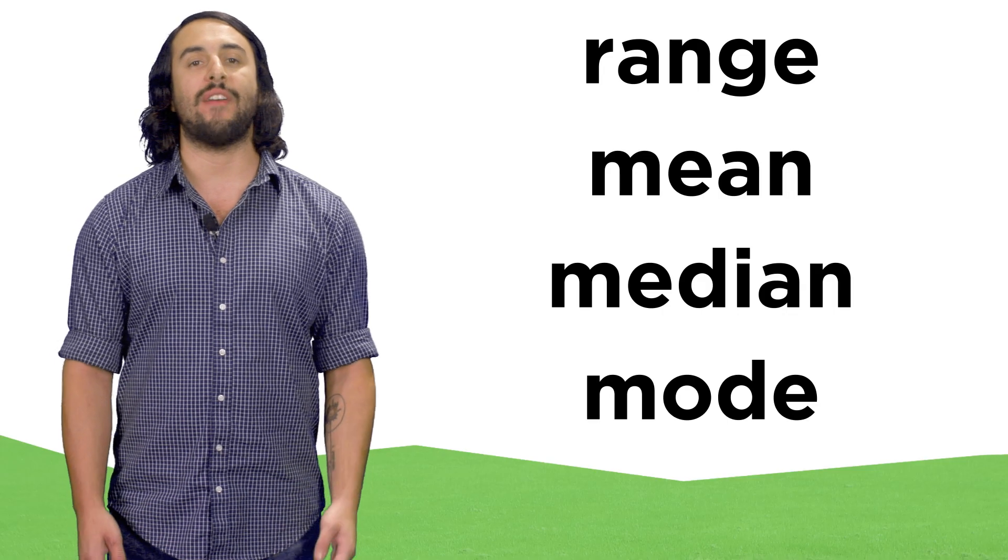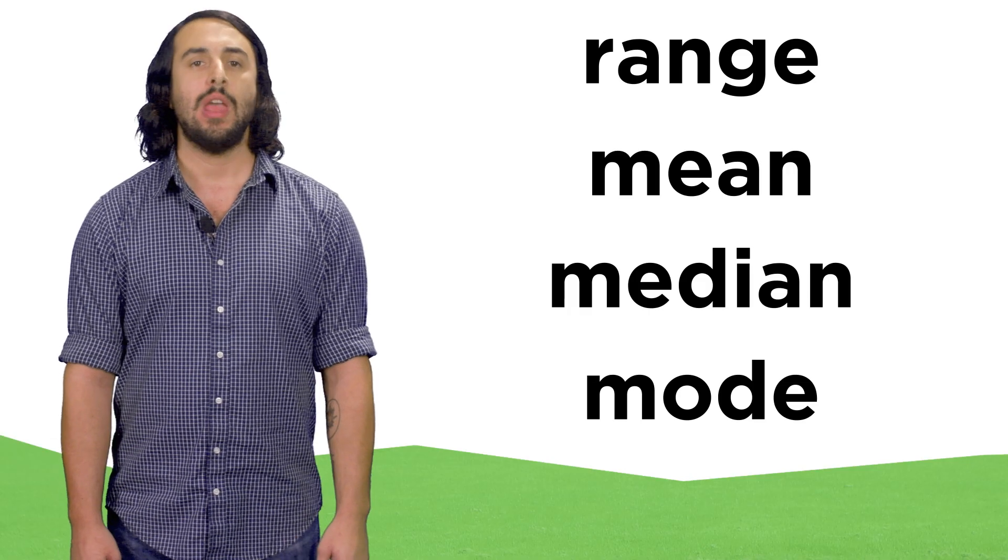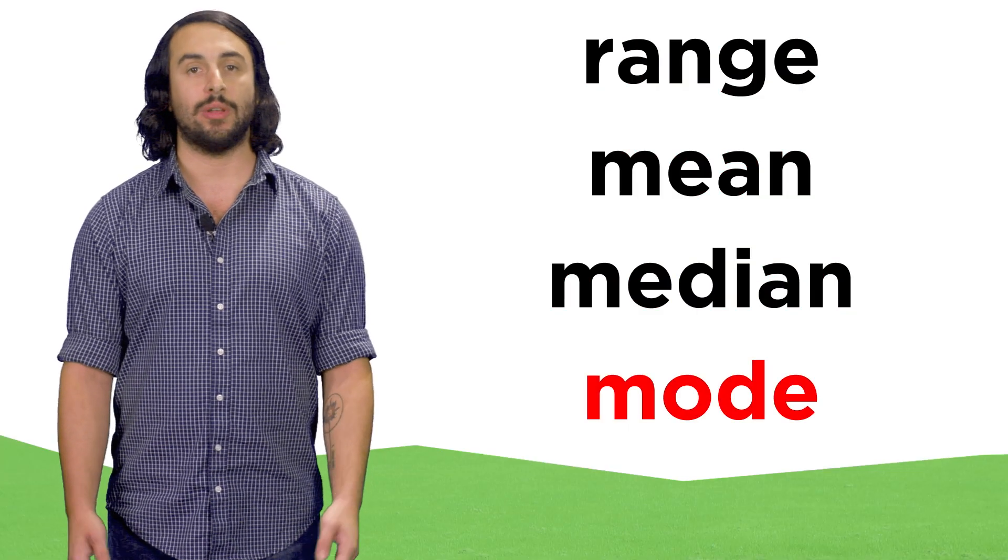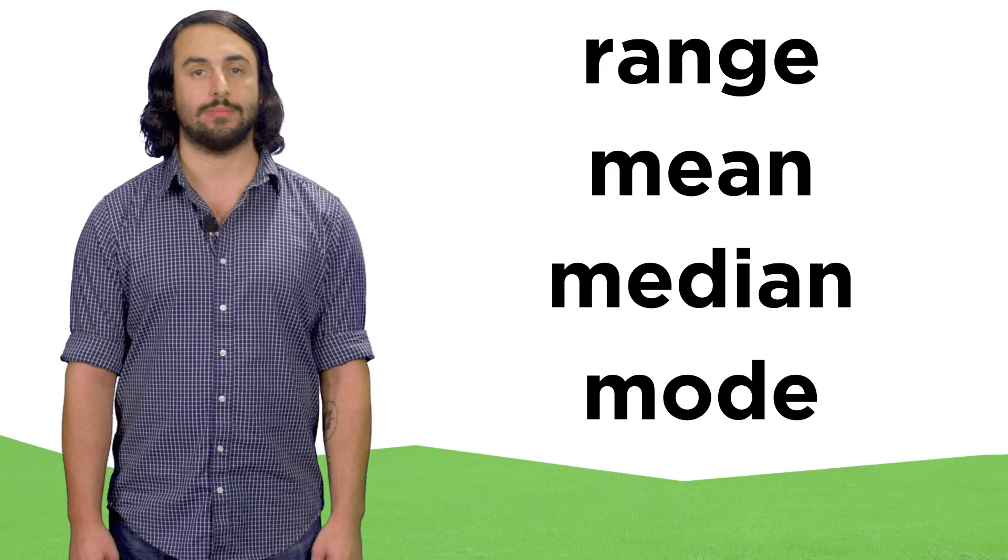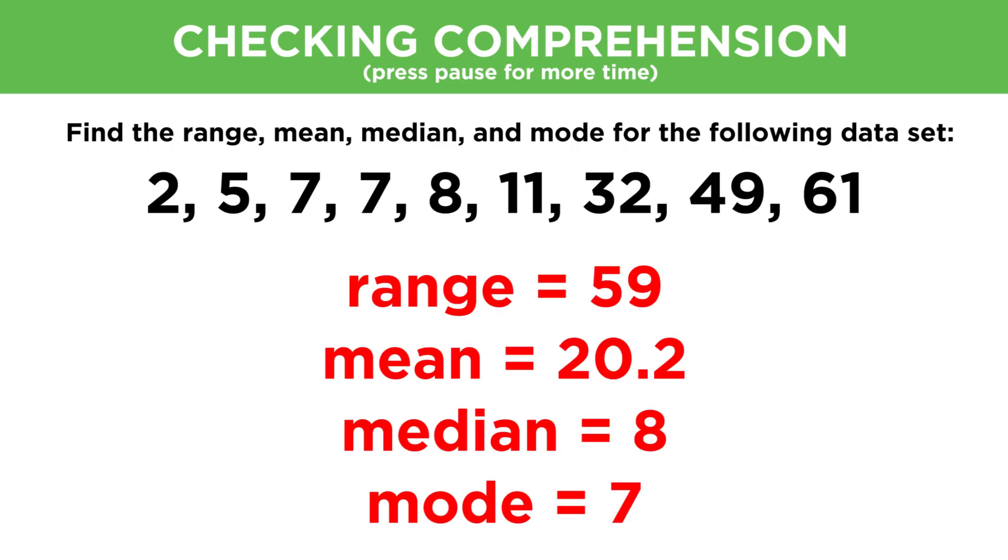So we can see that there are a variety of ways to summarize data, depending on what you are trying to communicate. Now that we know the meanings of range, mean, median, and mode, and how to determine them, let's check comprehension.